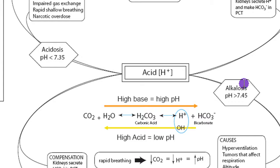If there's too little acid, this is called alkalosis, defined by a pH above 7.45. Remember that on the pH scale, a higher number means more basic and a lower number means more acidic. The pH scale is also logarithmic, so any jump in pH represents a 10-times change in hydrogen ion concentration. If the pH goes below 7.35, this is acidosis.